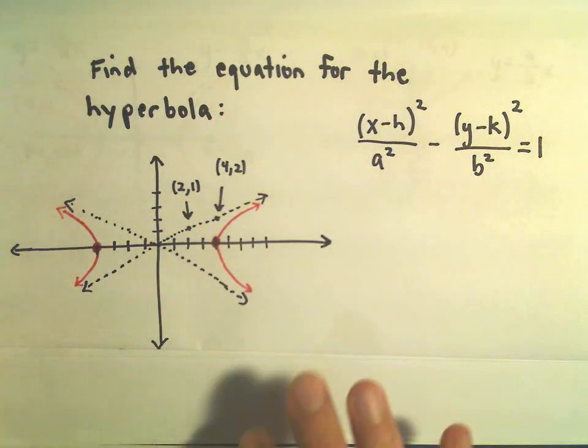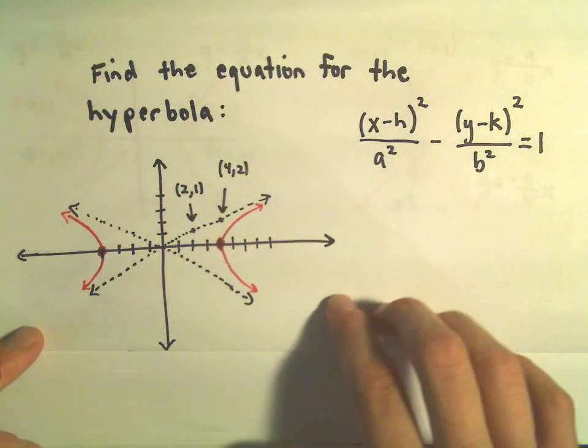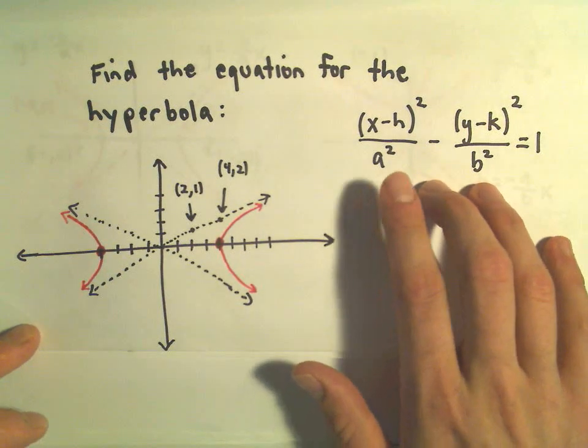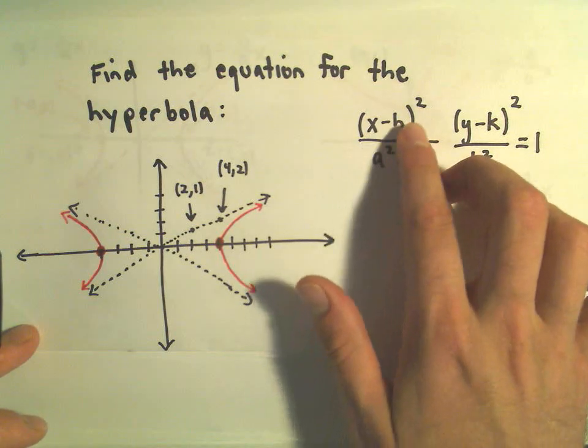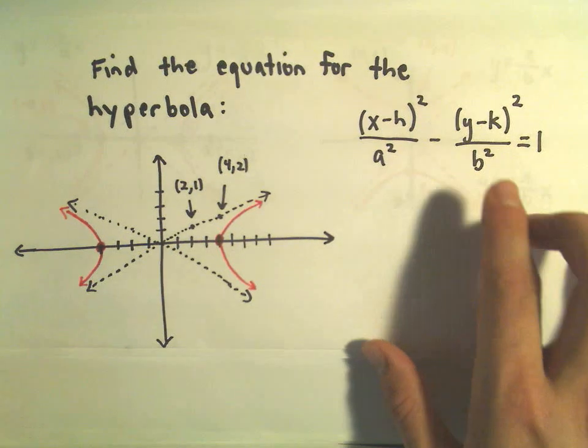So we're going to find the equation for this hyperbola here in the bottom left. We can write the equation of a hyperbola a little more generically by saying x minus h squared over a squared minus y minus k squared over b squared.